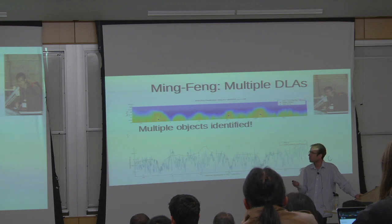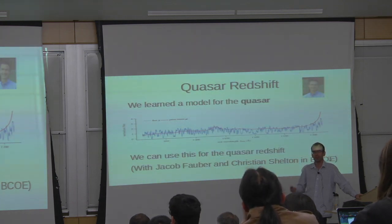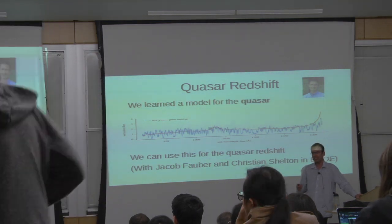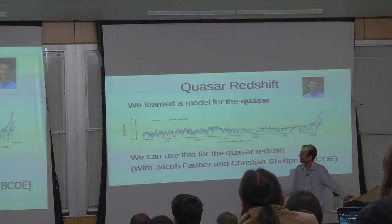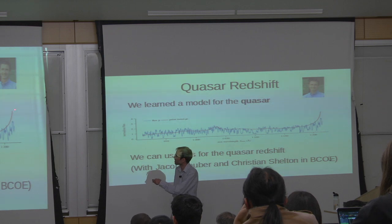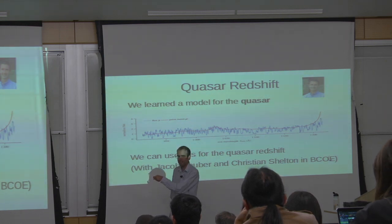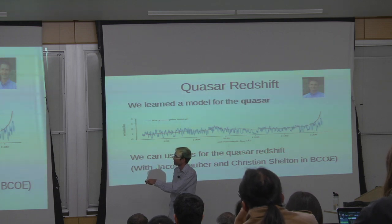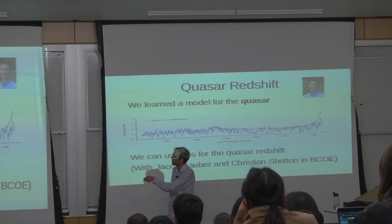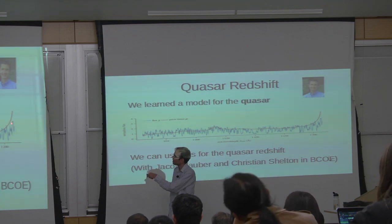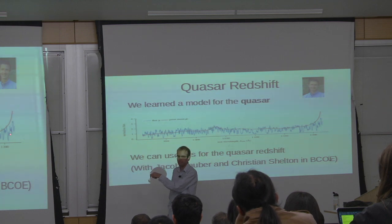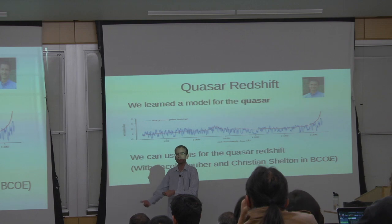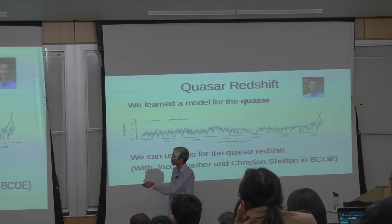Another thing we can do: we've learned a model for the quasar, not the absorber. So anything we want to do with the quasar, we can also do with this model. In particular, we might want to know the redshift of the quasar. The red line is the model for what the quasar should look like without noise or absorption. If I shift it, it won't match the blue line very well. So we can use this red line to work out the redshift — essentially what is the shift between the red and blue line.